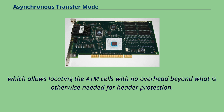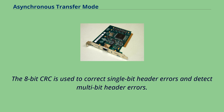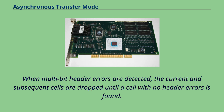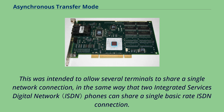The 8-bit CRC is used to correct single-bit header errors and detect multi-bit header errors. When multi-bit header errors are detected, the current and subsequent cells are dropped until a cell with no header errors is found. A UNI cell reserves the GFC field for a local flow-control/submultiplexing system between users, intended to allow several terminals to share a single network connection. All four GFC bits must be zero by default.